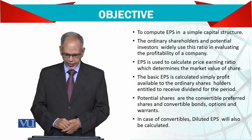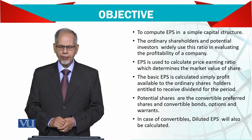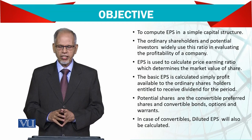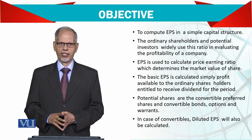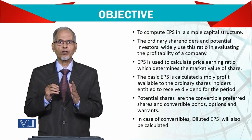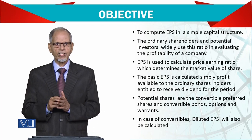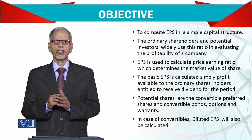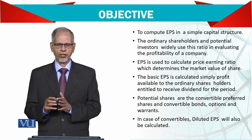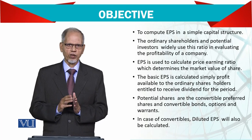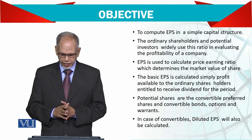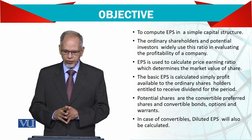Basic earnings per share is calculated simply as profit available to the ordinary shareholders. An important point is that only ordinary shareholders who are entitled to receive the dividend for the period are included. Ordinary shareholders who are not entitled to a dividend at that time are not supposed to be included.